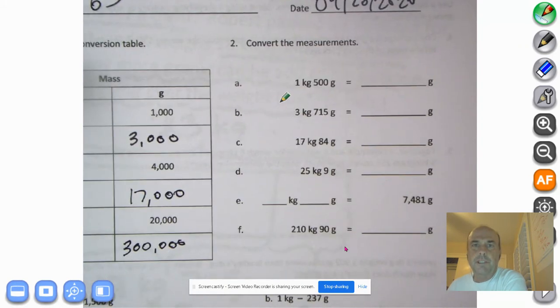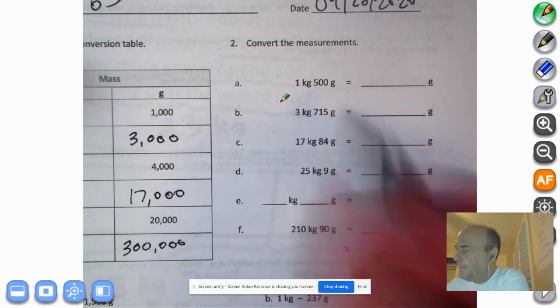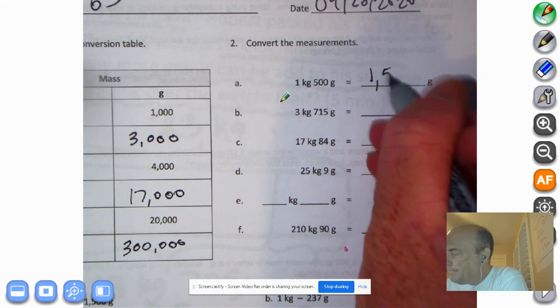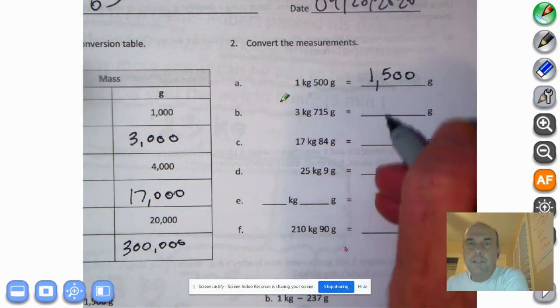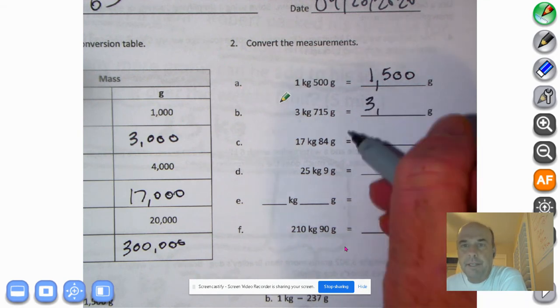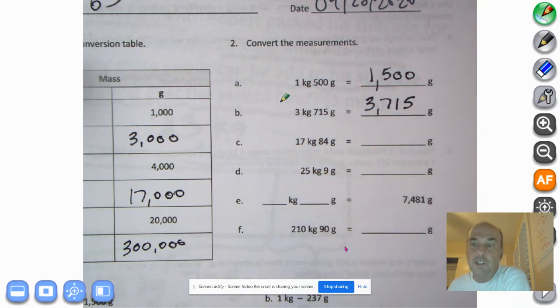Here we go. It says convert the measurement. So we have one kilogram, 500 grams. So I know that would be 1,000, right, for the one kilogram, 500. And do this one with me. Three kilograms, 715 grams. So it would be 3,000, right, for the three kilograms, 715. Go ahead and pause the recording and then hit play when you've finished this column.